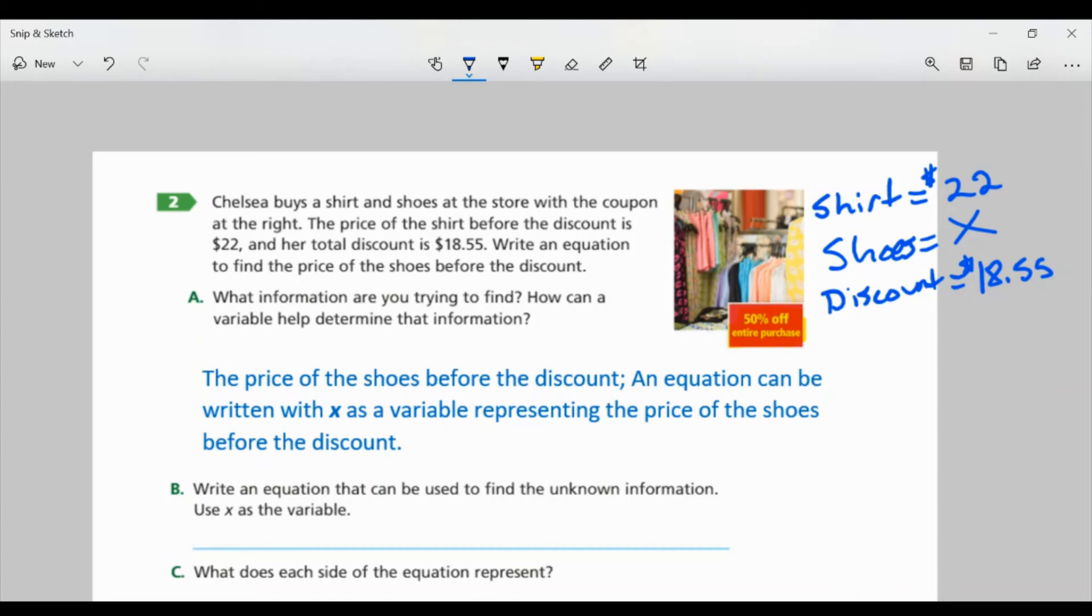So part B, write an equation that can be used to find the unknown information. Use X as the variable. Well, I know I want to add the shirt, which was $22, plus the shoes, right?